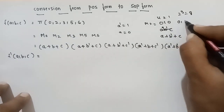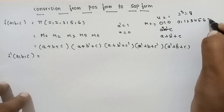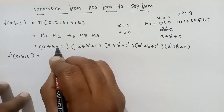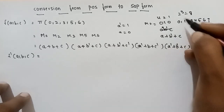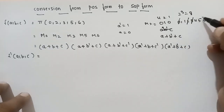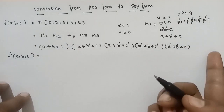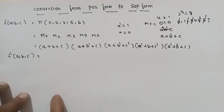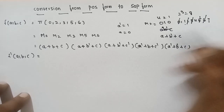For the 3-variables form, 2 cubed gives 8 max terms. The 8 max terms are 0, 1, 2, 3, 4, 5, 6, 7. The formula of the max terms uses 0, 2, 3, 5, 6. The remaining terms will be the min terms.